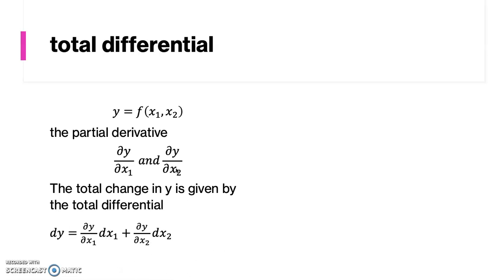Thus, the total change is the result of a total differential and is expressed as follows. The expression dy, being the sum of the approximate changes from both sources x1 and x2, is called the total differential of the y-function. And the process of finding such a total differential is called total differentiation.